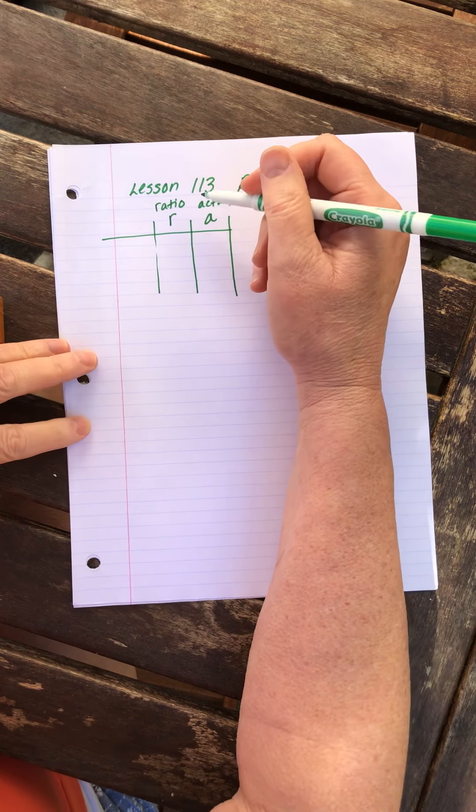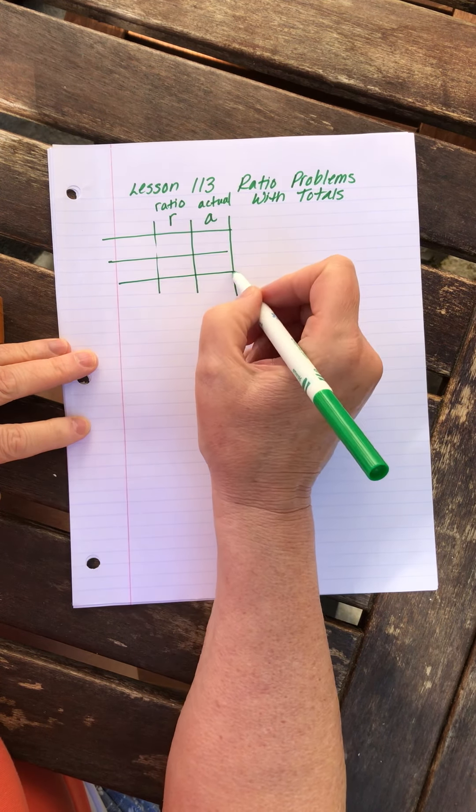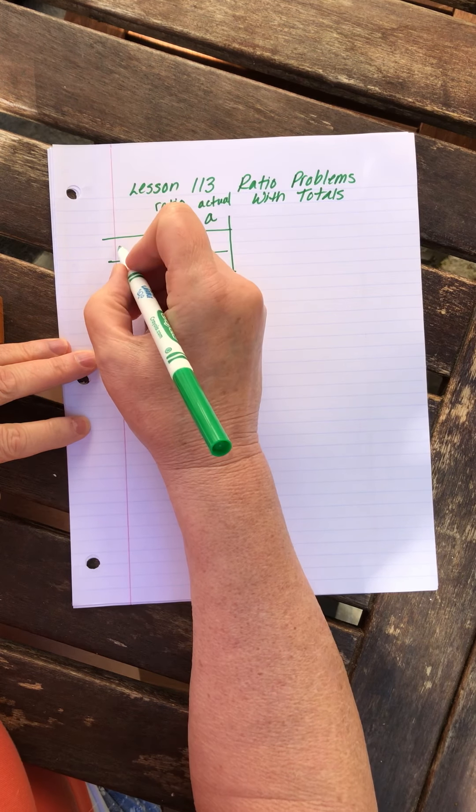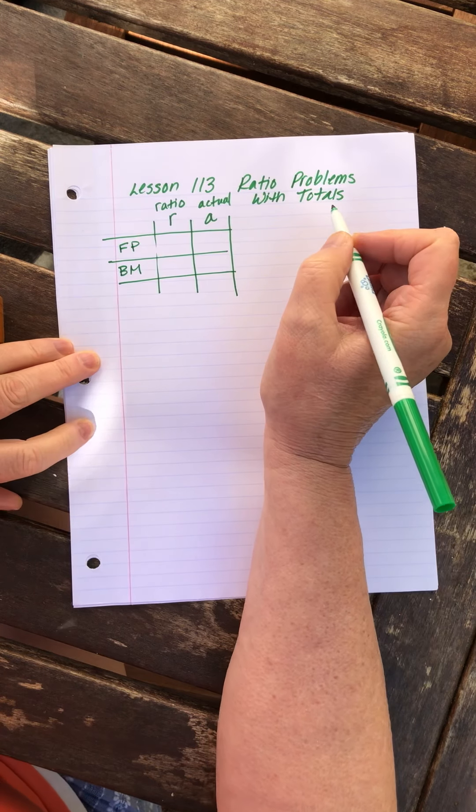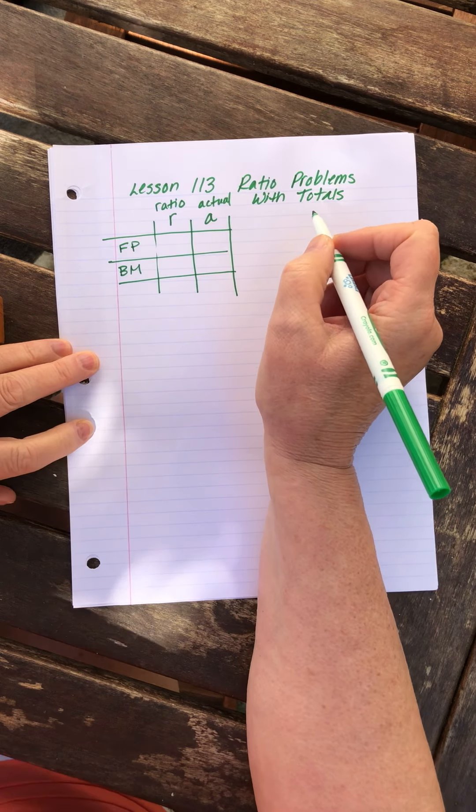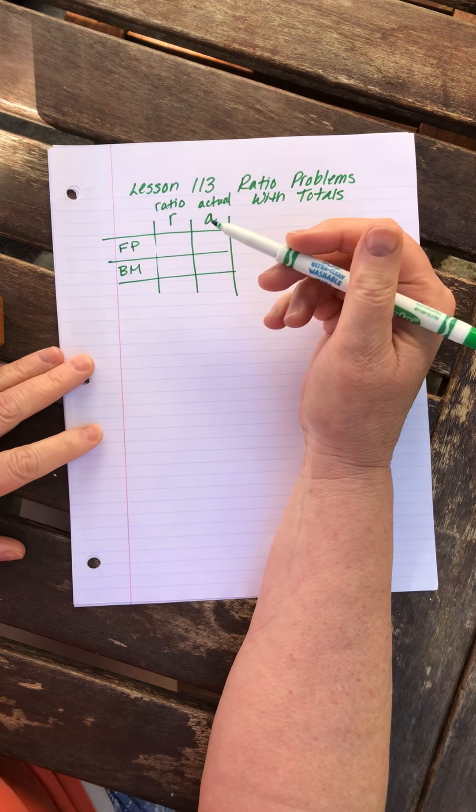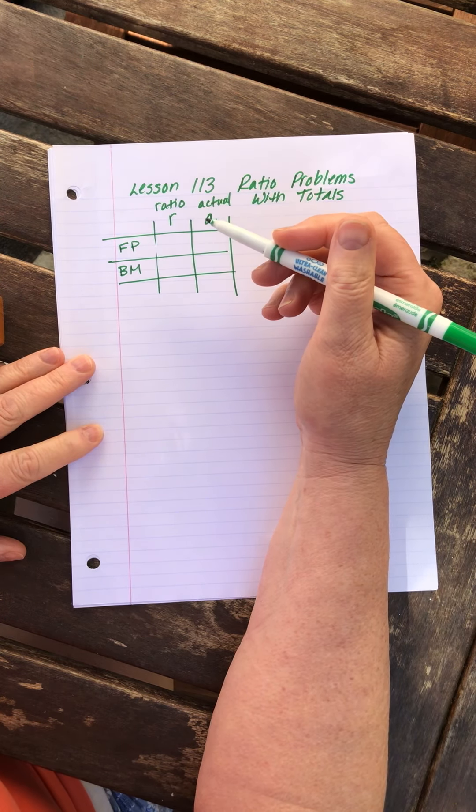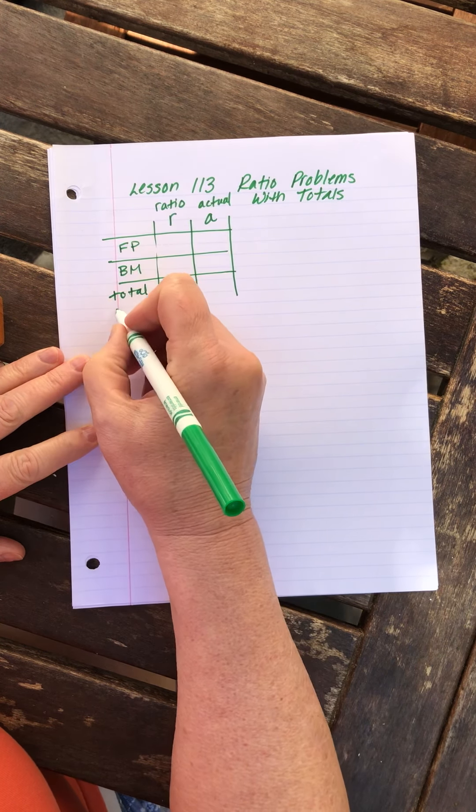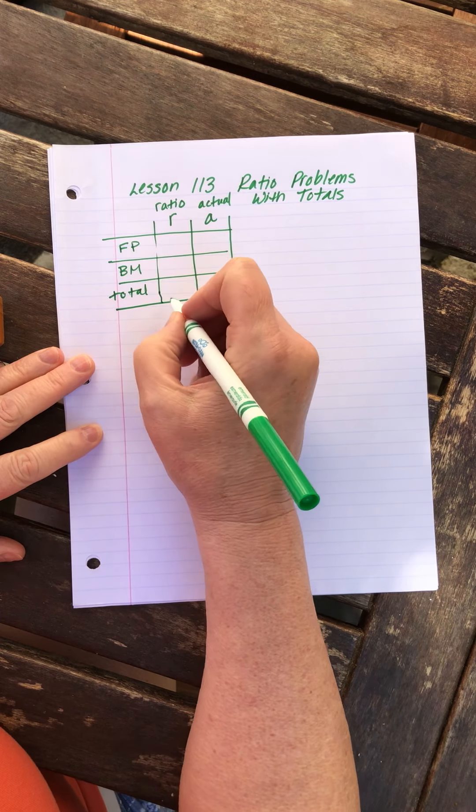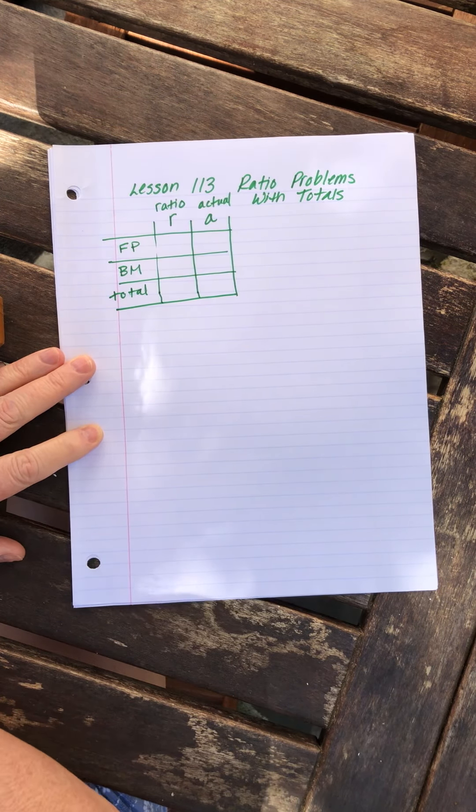In the problem we're going to do, we're going to talk about the ratio of football players to band members. So I'm going to say football players to band members. You know what, my wrist has other things to do besides just write math problems out, as does yours, so use abbreviations whenever useful. And then this time we want to have a total row. The columns stay the same, we just add one more row.